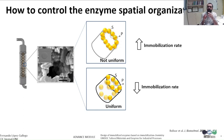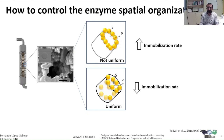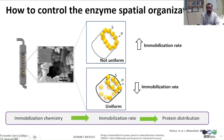The enzyme distribution across the surface of the material plays an important role, because there is a competition between the immobilization and protein diffusion kinetics. If we simplify the pores of our porous carriers as a cylinder, we see that if immobilization is faster than diffusion, the enzyme will be mainly located at the outer surface of the carrier. However, if immobilization is slower than enzyme diffusion, the enzyme will have enough time to diffuse through the pores, reaching deeper surfaces within the porous structure. Enzymes immobilized through chemistries that promote fast immobilization kinetics will be mainly located at the outer surface, while those immobilized through slower kinetics will be distributed on inner regions of the carriers.